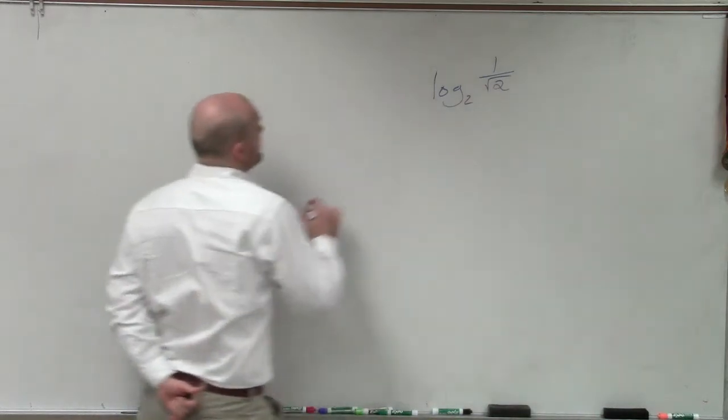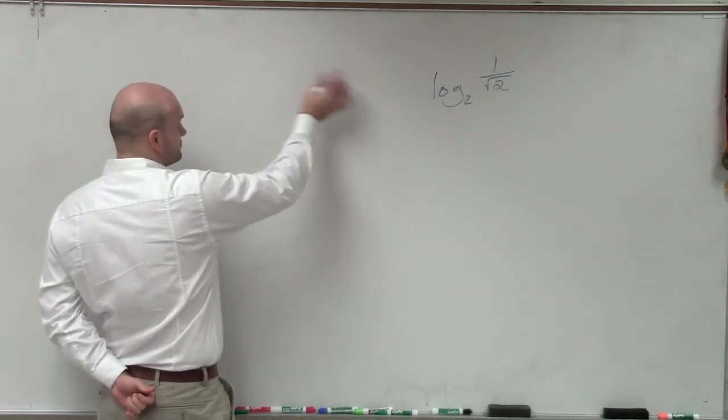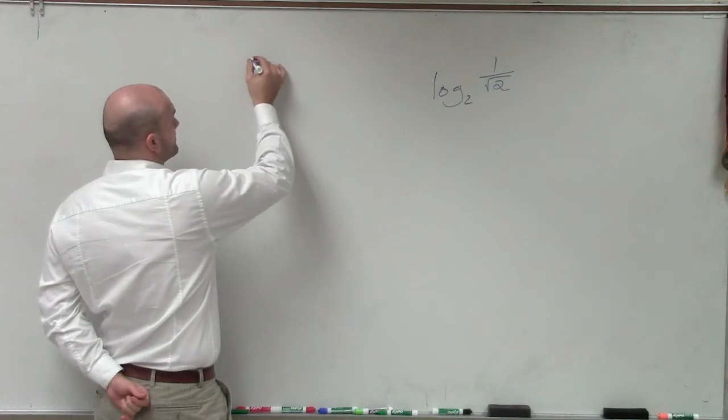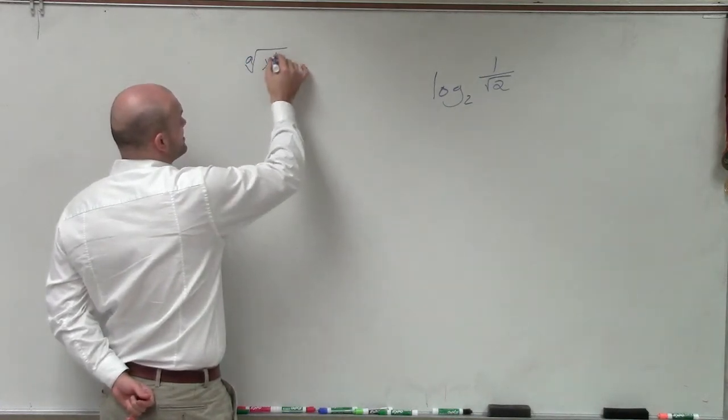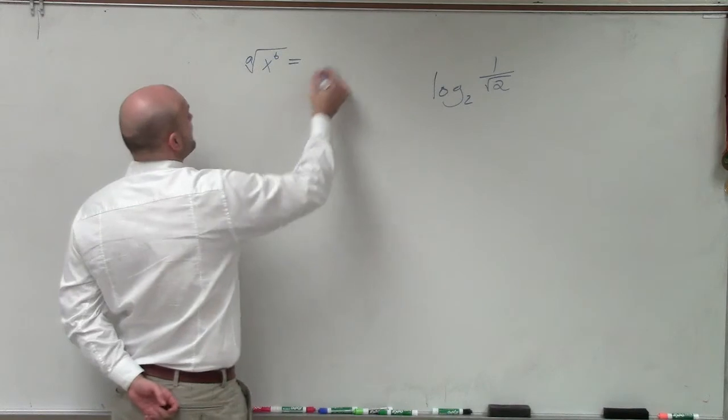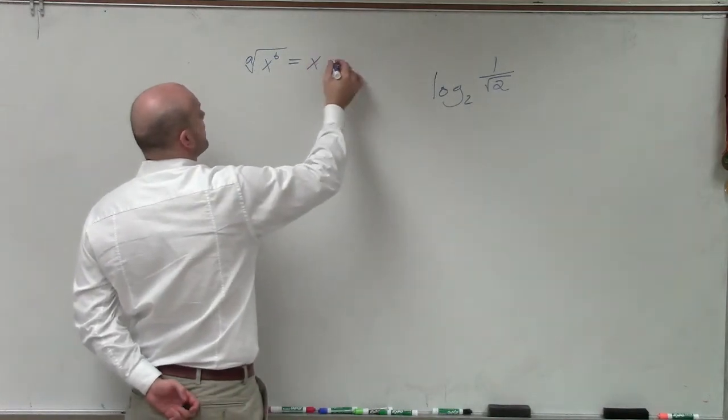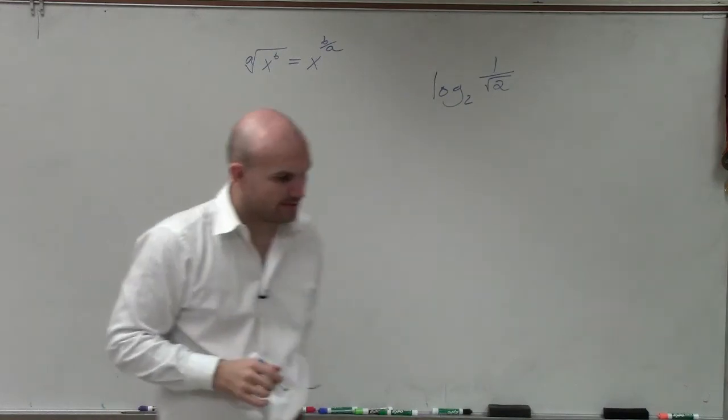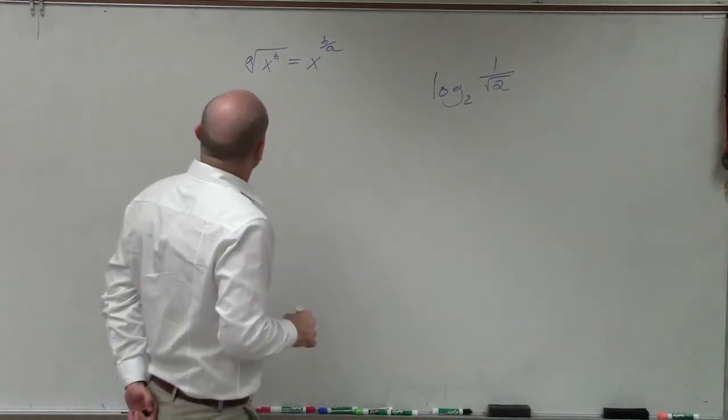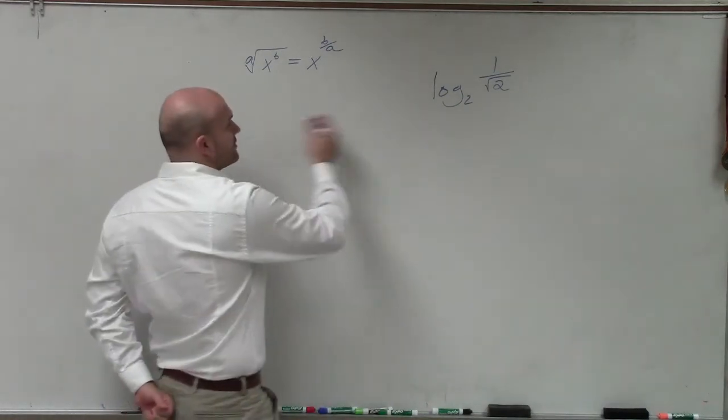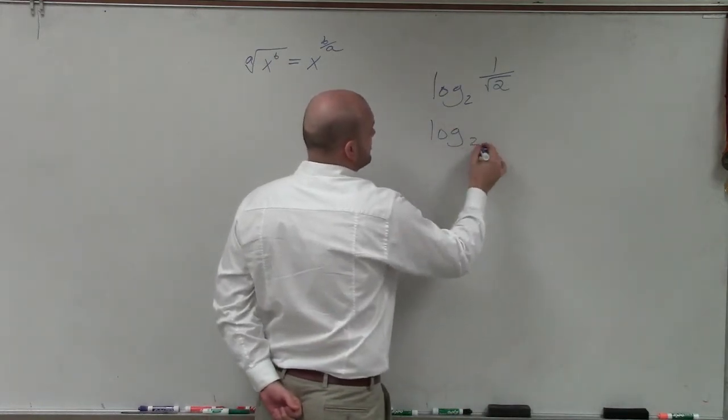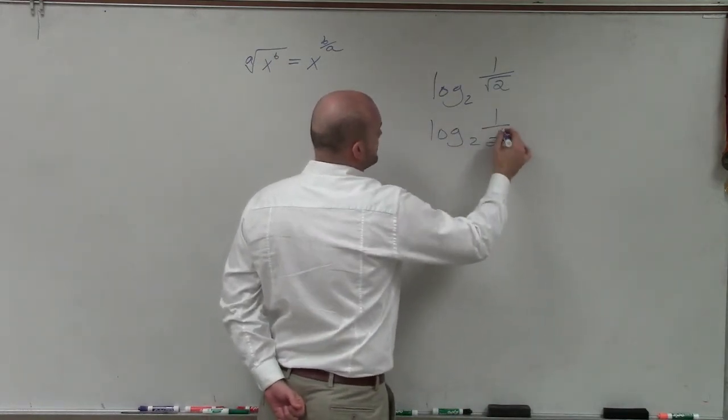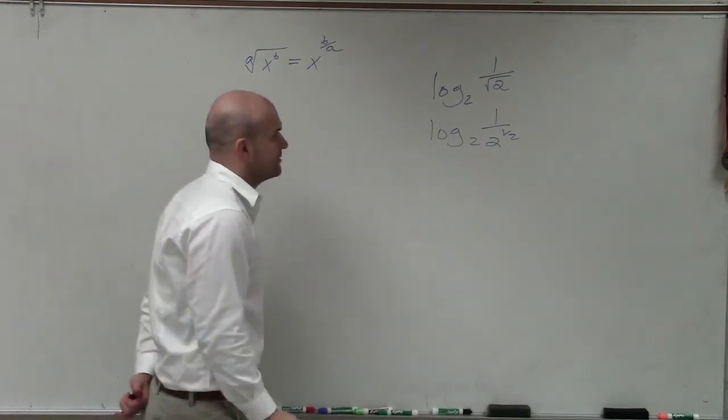So first of all, I can rewrite my fraction. Remember, if we have the a root of x to the b, we can rewrite that as x equals b over a. All right, 1 half. Correct. So therefore, you can see this is the square root, so I can rewrite this as log base 2 of 1 over 2 to the 1 half power.